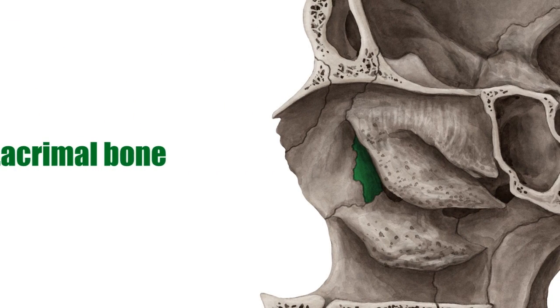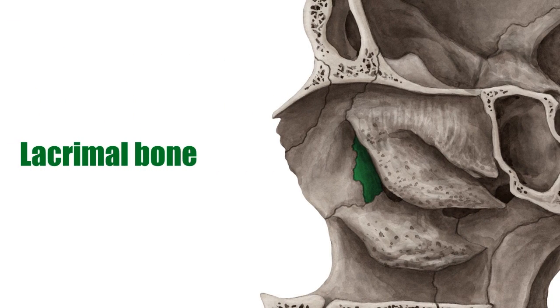The lacrimal bone can be found on the medial wall of the bony orbit. It houses the lacrimal sac and supports the contents of the eye socket.